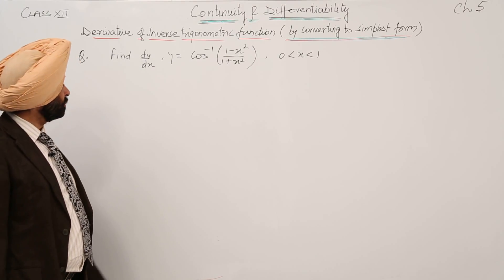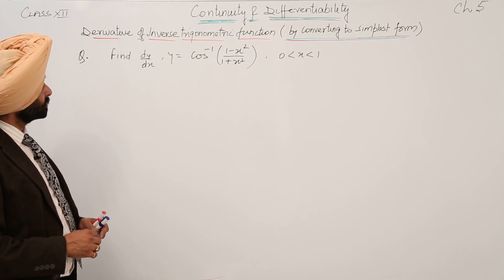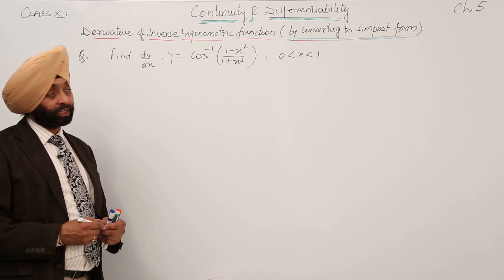A question from NCERT book. We have to differentiate y equals cos inverse of (1 minus x square) upon (1 plus x square).